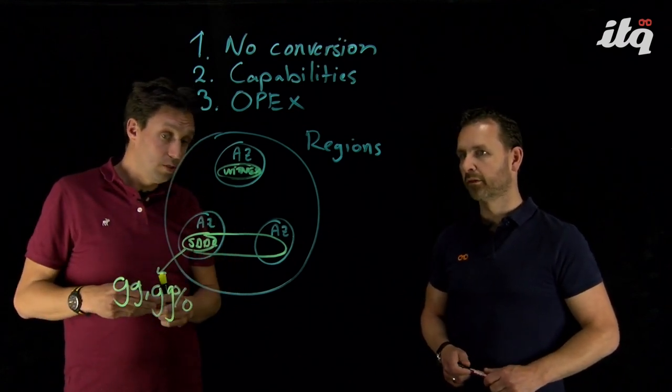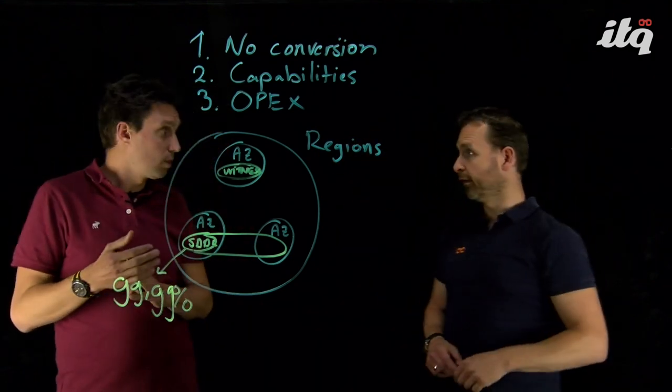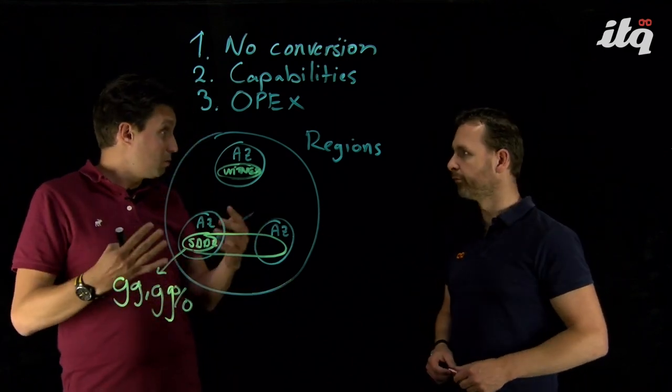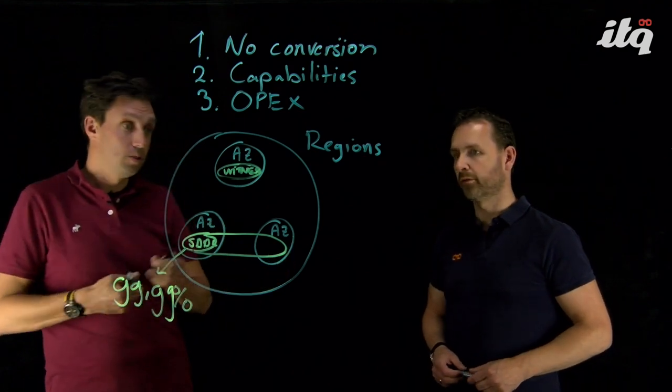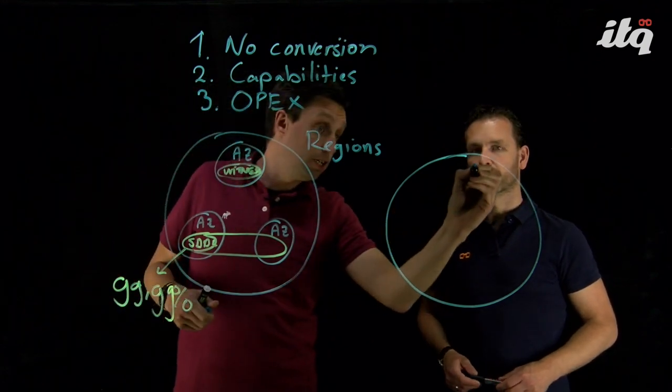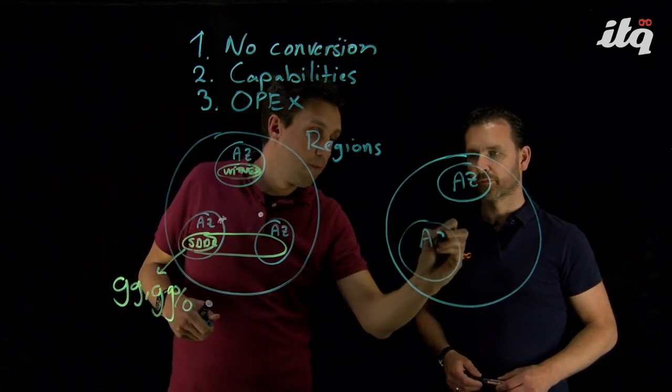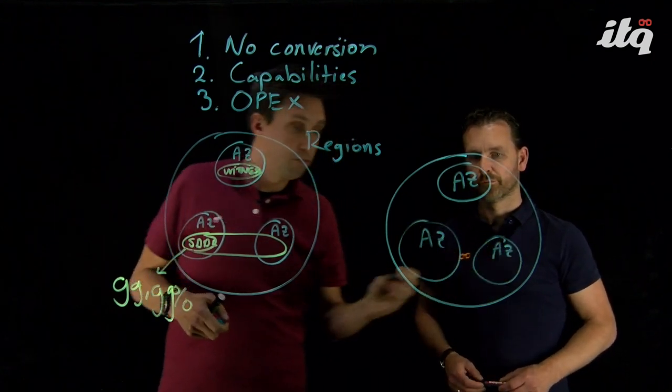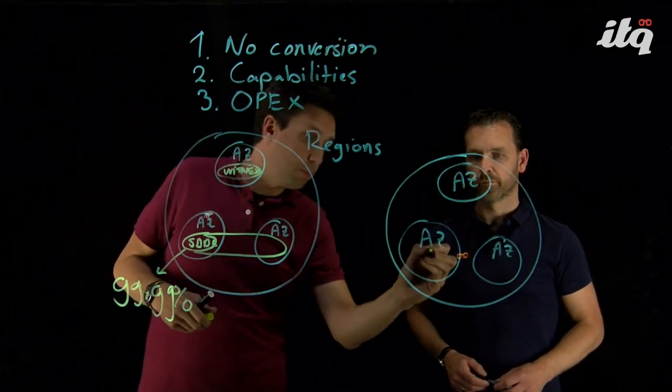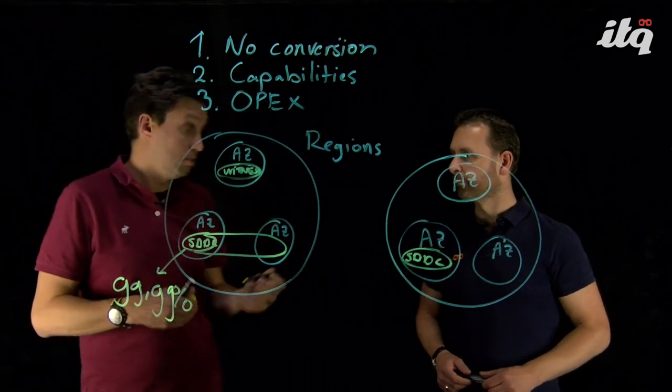So this is one of the options you have to increase your availability. Okay, what if I want to protect my SDDC on a regional level? You can do this as well. And in that case, we have to work with a secondary region. So I will draw an additional region here. And this region again has different availability zones, of course.